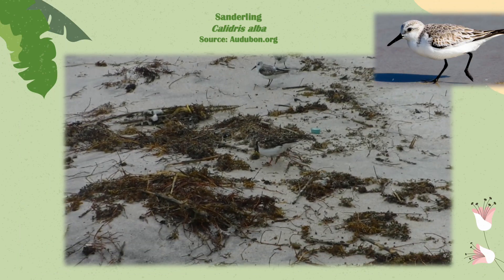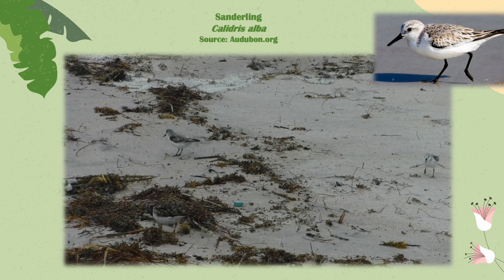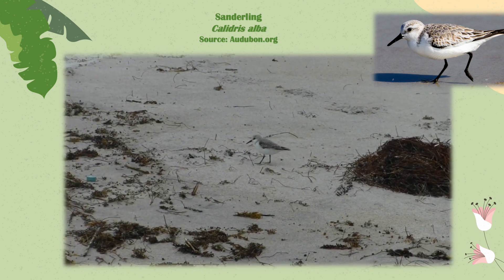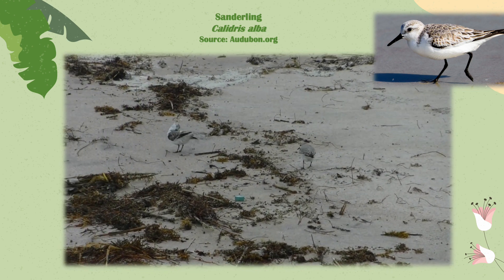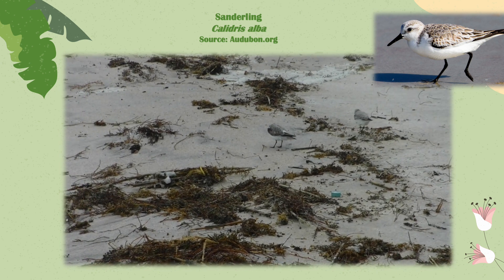Next we have a sanderling, Calidris alba — you'll see it is the white bird in the video with black feet and black beak. These birds are obsessed with chasing waves — they're the little birds on the beach that run super fast. They breed only on high arctic tundra and then migrate during the winter to live on most of the sandy beaches around the world.